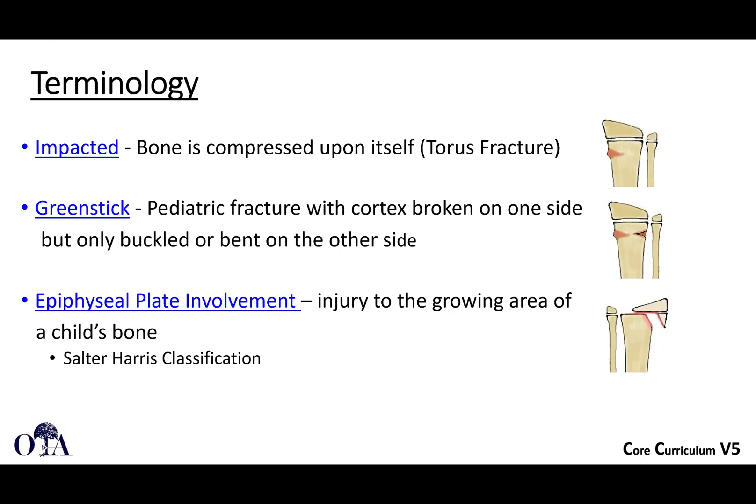An impacted fracture is different from the articular depression we discussed earlier. Here you see impaction, something you may see in a pediatric fracture, where the bone kind of compresses upon itself. I like to think of this as sitting on top of a cardboard box that doesn't snap in half — it just squashes and shortens. That's what can happen in soft, immature bone.